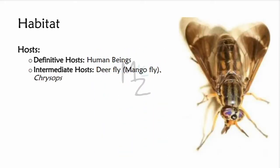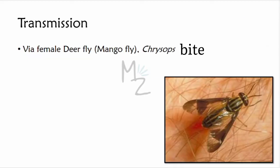Human beings are the definitive hosts, while the intermediate hosts are the deer fly — also called the mango fly — of the genus Chrysops. Transmission occurs via the bite of the female deer fly, mango fly, or Chrysops.